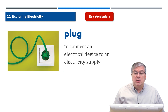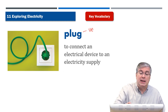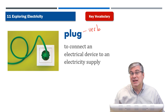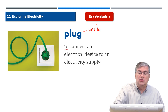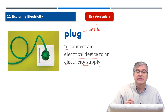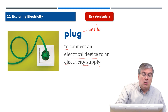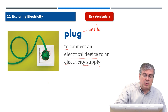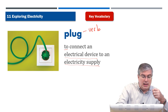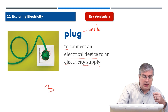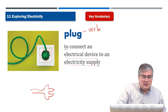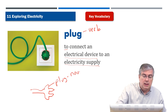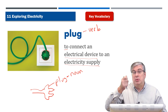Next we have 'plug.' Plug is a verb but it can also be a noun. As a verb, plug means to connect an electrical device to an electricity supply. You see this green part here — if we take it out and look at it sideways, it probably looks like this. This is also a plug, but as a noun. So 'to plug' means to plug the plug into the outlet.